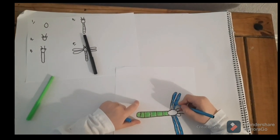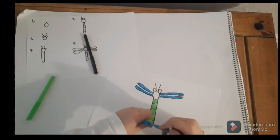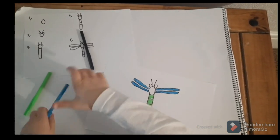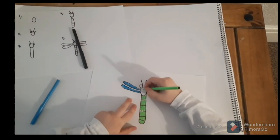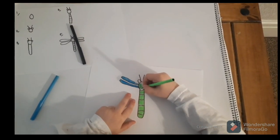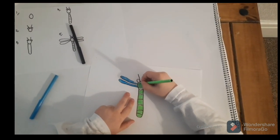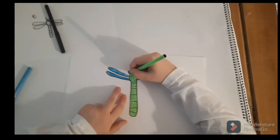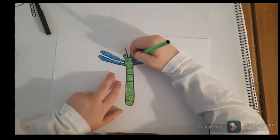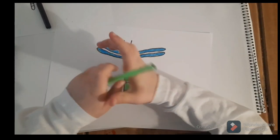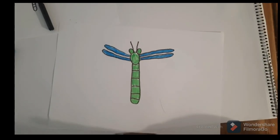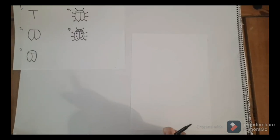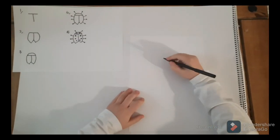Again, you can always pause if we're too fast. And then, get the green out again and then do the head. There is our dragonfly. Okay, first we'll start with doing a small T. Not too small though.